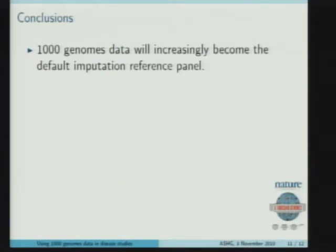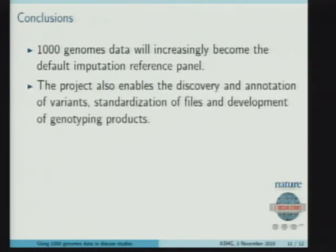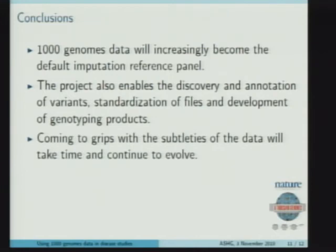To finish: 1,000 Genomes is definitely going to become the default reference panel, incorporating all the information currently in HapMap data and then some. In addition to imputation, which the project will support by releasing reference datasets, it also enables the discovery and annotation of variants, the standardization of file formats across many different types of data the project generates, and the development of genotyping products — companies like Illumina are now building arrays with two and a half or five million SNPs and indels all generated from the 1,000 Genomes data, enabling a new generation of GWAS. The project is also working to come to grips with the subtleties of the data, as the different types of variation are at different states of maturity.